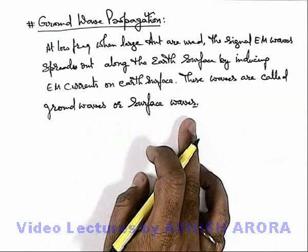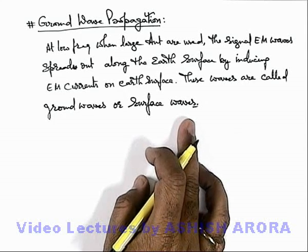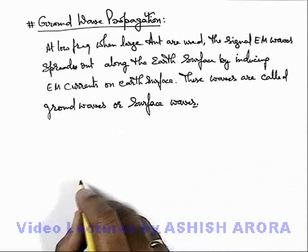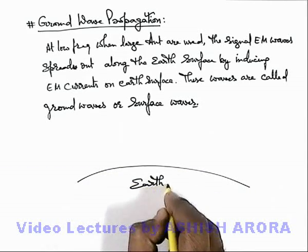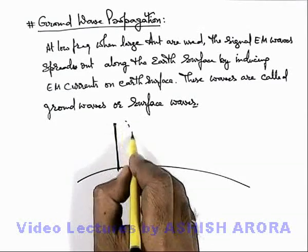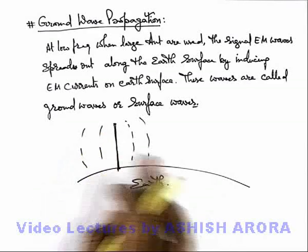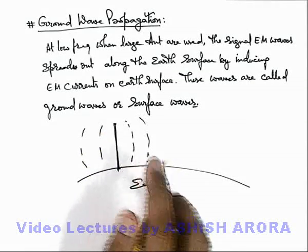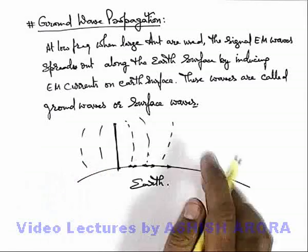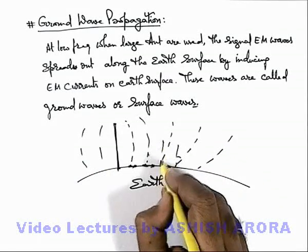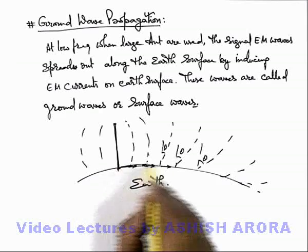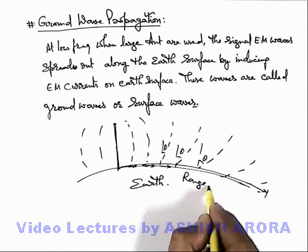Generally such waves have vertical wave fronts. As earth is having induced current, the wave front tilt continuously increases toward the earth's surface. If this is the earth's surface and there is a vertical large size antenna placed, it produces wave fronts in its surroundings. These wave fronts contain electromagnetic field which induces currents on earth's surface. As the wave propagates, the inclination of the wave front with respect to the normal continuously increases, or the wave front tilts toward the earth's surface, due to which the range of such waves is quite less.